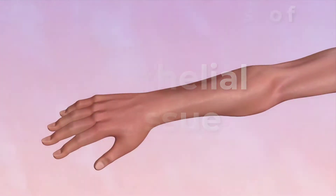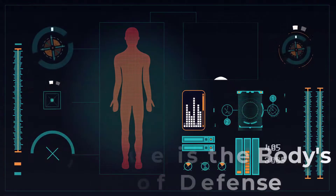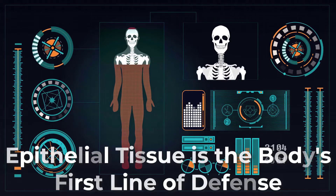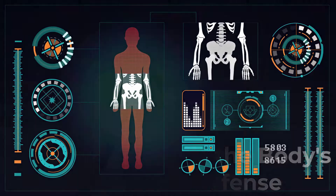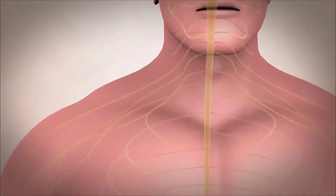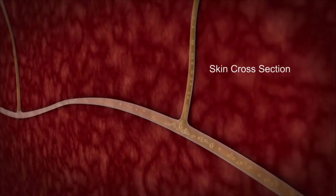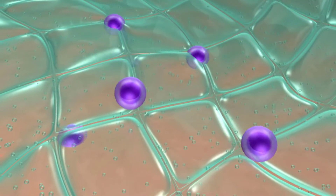Epithelial tissue. Generalized functions of epithelial tissue. Epithelial tissue provides the body's first line of protection from physical, chemical, and biological wear and tear. The cells of an epithelium act as gatekeepers of the body, controlling permeability and allowing selective transfer of materials across a physical barrier. All substances that enter the body must cross an epithelium.